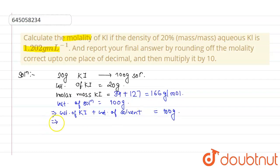Weight of solvent here is water, so weight of solvent of water comes out to be 100 minus 20 as weight of KI is 20, which comes out to be 80 grams.